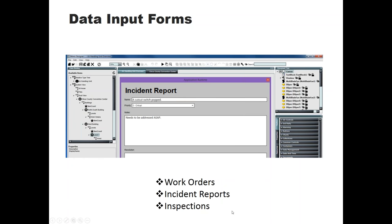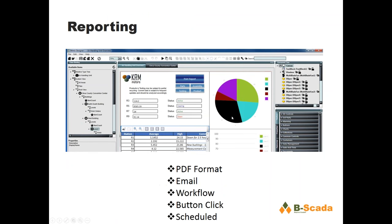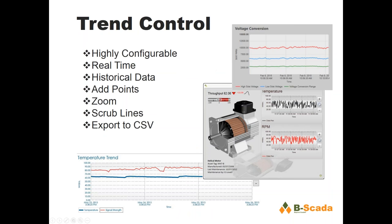It might be an incident report, an inspection — whatever is important to you, you can build and design in the system. The mimic designer is also used for reports. A report can be populated with live data or with history — what's happened in the last 8 or 24 hours — and that mimic gets saved as a PDF and can be sent out through email. The report can be generated from a button click, from a schedule set up to run once a day, or even triggered by workflow.